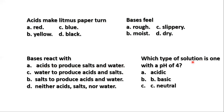Which type of solution is one with a pH of 4? A pH of 4 is an acid, since it is less than 7.